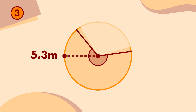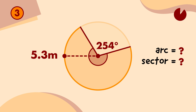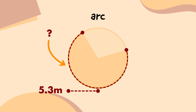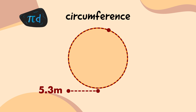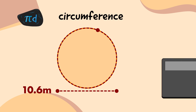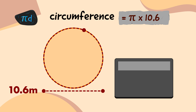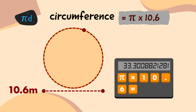Here's the last one. My measuring staff tells me that its radius is 5.3 metres, and the angle of the covered portion is 254 degrees. I'll start by working out the circumference of the whole emblem. If the radius is 5.3 metres, and the diameter is always twice as long as the radius, that means the diameter is 10.6 metres. So on my calculator, I'll multiply 10.6 by pi — I'll press the pi button, press the multiply button, type 10.6, and press the equals button, which tells me that the circumference of the third emblem circle is 33.3008821281 metres.